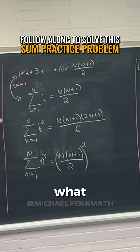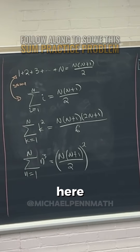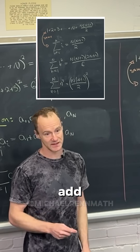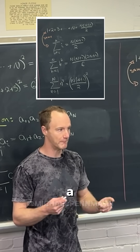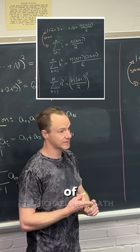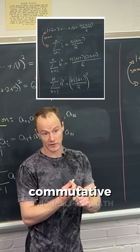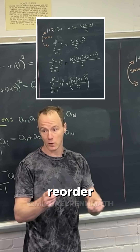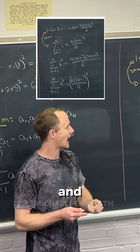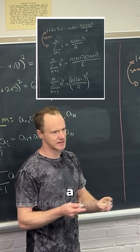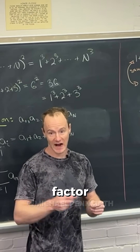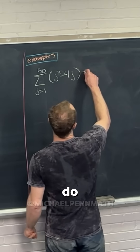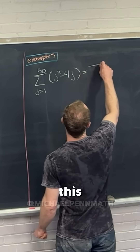This doesn't look exactly like what we have over here, but recall that the sigma notation just means add things up. We know a bunch of things about addition: first of all it's commutative, and it's associative, so that means we can reorder and regroup it any way we want. There's also a distributive rule where you can factor things out, and all of that allows us to do the following.